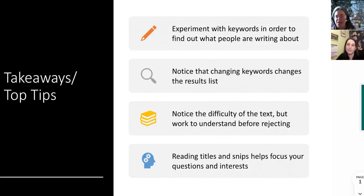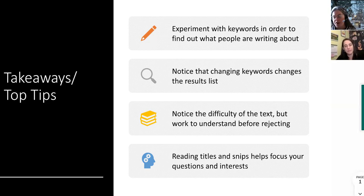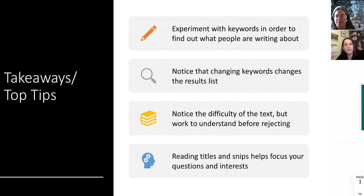Just to recap, the kinds of things that we did were: we tried out different keywords to get some answers to our question and to see what writers are writing about on this topic. We noticed whether we were interested in an article and whether we thought we'd understand the words in it. In some cases we really tried to understand the title before automatically deciding not to use it. And just in the conversation and the reading, we started getting clarity on what question we're really interested in. We paid a lot of attention to how changes in keywords change the search results.